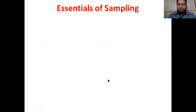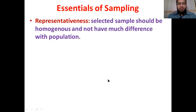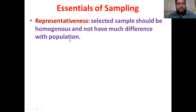There are some essentials of sampling. First is representativeness — a selected sample should be homogeneous and not have much difference with the population. For example, if we are studying average age, we don't have to select only the younger ones or only the older ones. To get the correct average age, we have to include both young, old, and middle-aged individuals. The sample should be representative of the rest of the population.